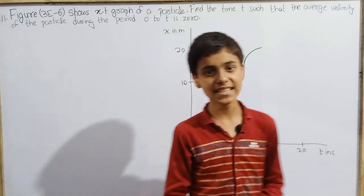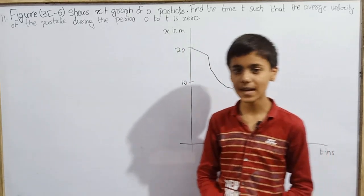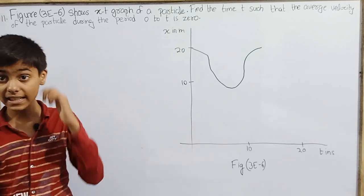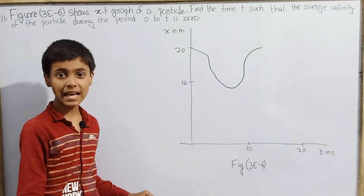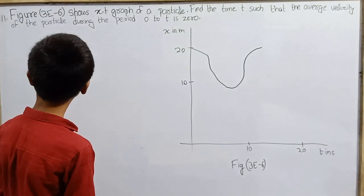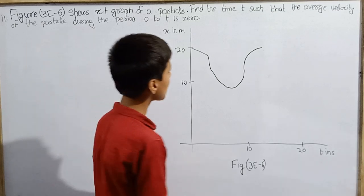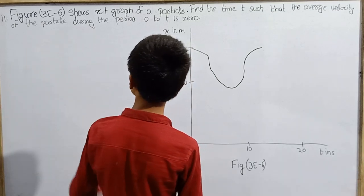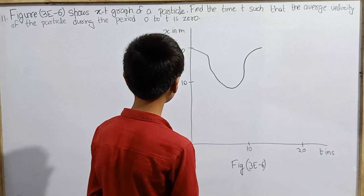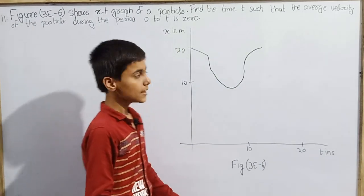Hello everyone, and we are back with Concepts of Physics textbook written by Professor H.C. Verma. Today we will solve kinematics question number 11, which is: figure 3A6 shows an X-t graph of a particle. Find the time t such that the average velocity of the particle during the period 0 to t is 0.